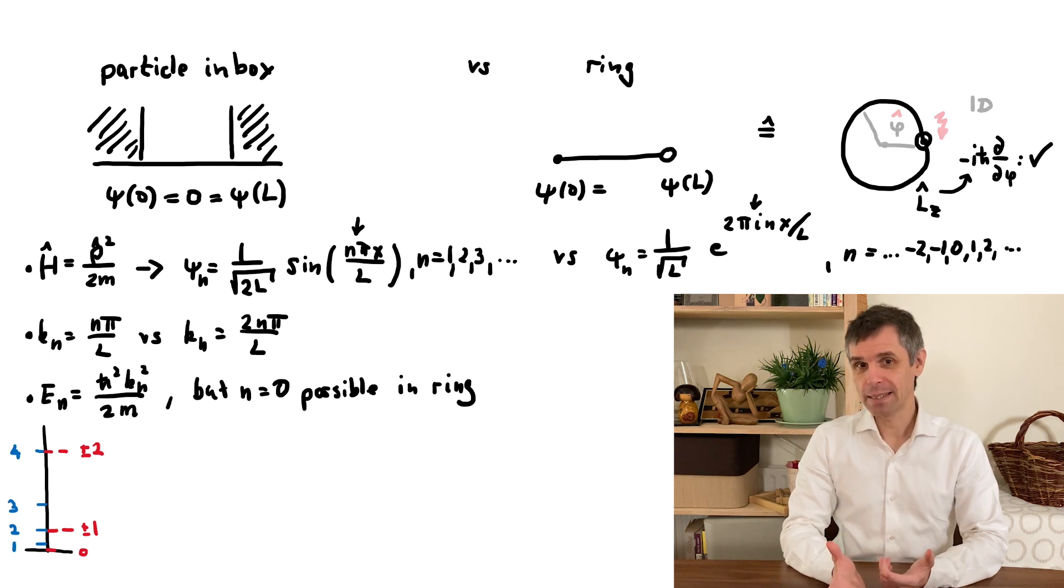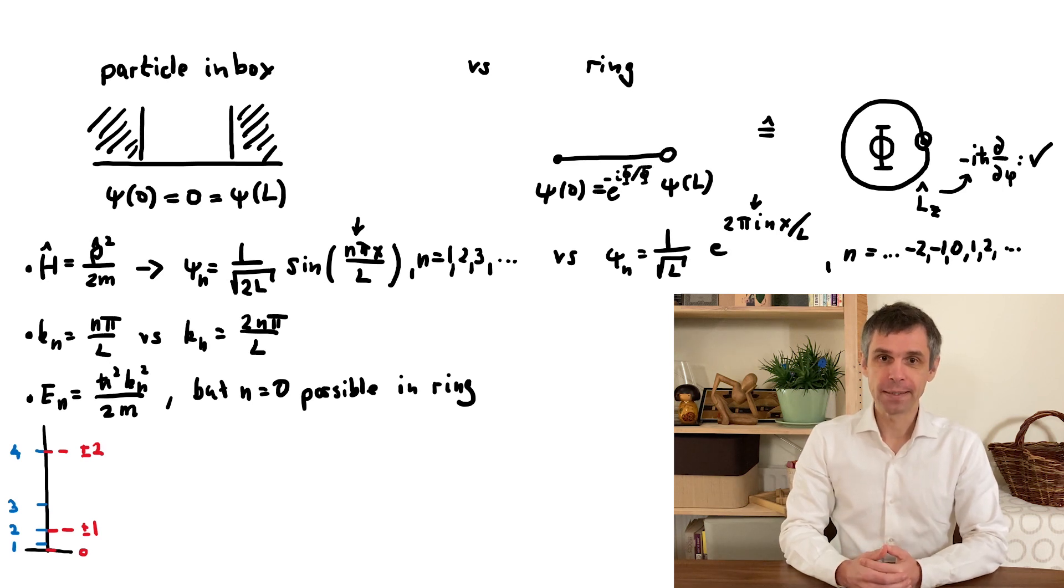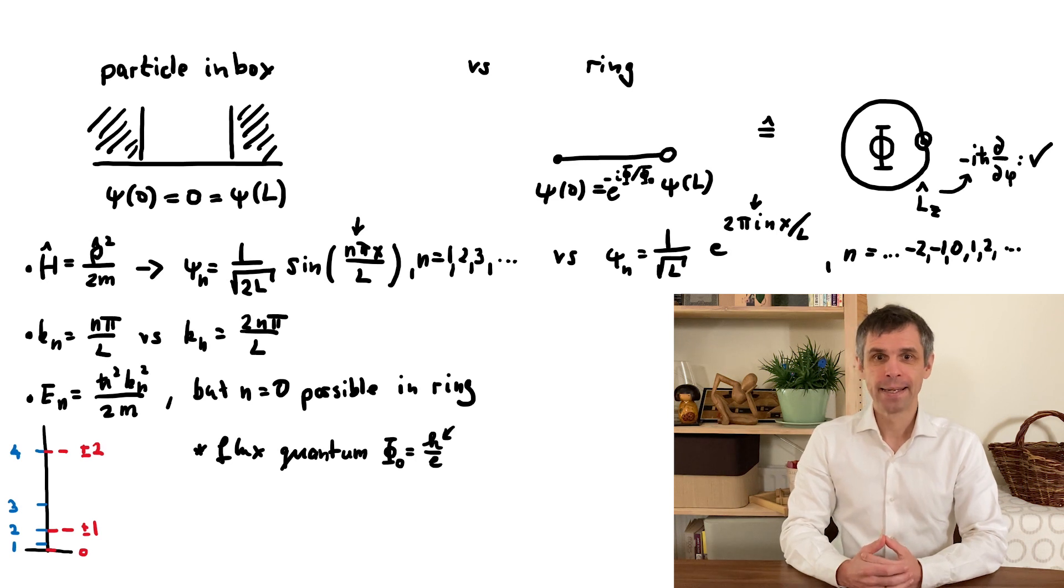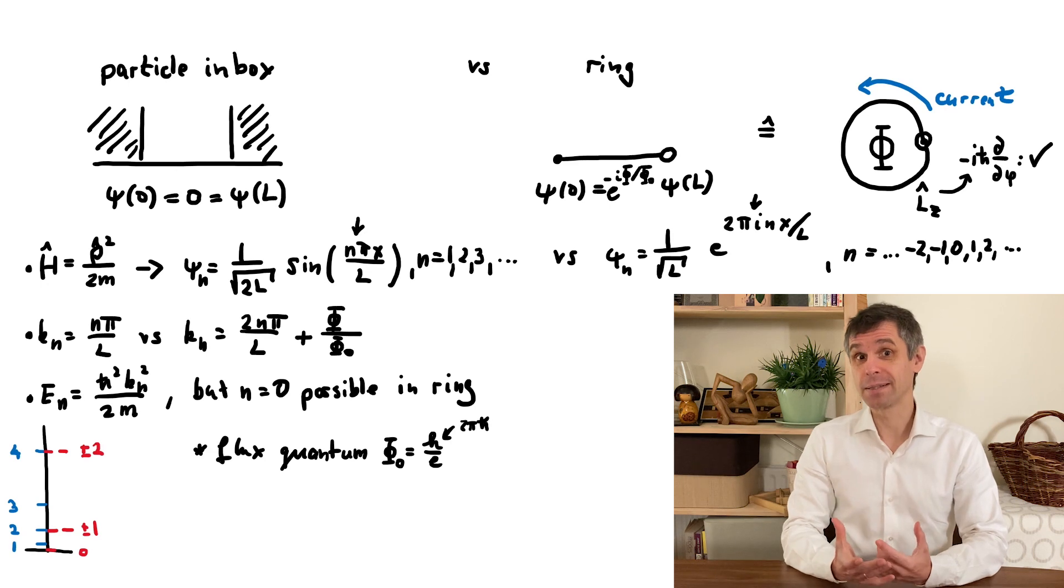Something similar can even happen in the rings mentioned above when you expose them to a magnetic field. This changes the boundary conditions in a very particular way, depending on the magnetic flux that passes through the interior of the ring. Now this gives the lowest energy state a finite momentum, so that a dissipationless current flows along the ring, which is known as the persistent current.